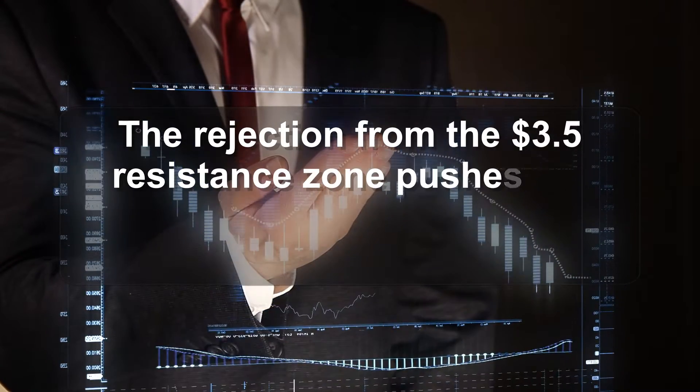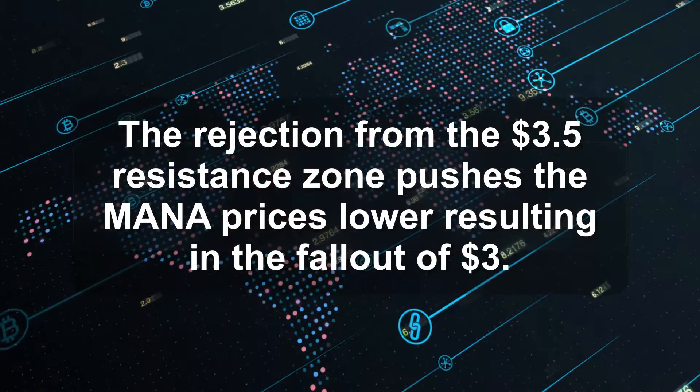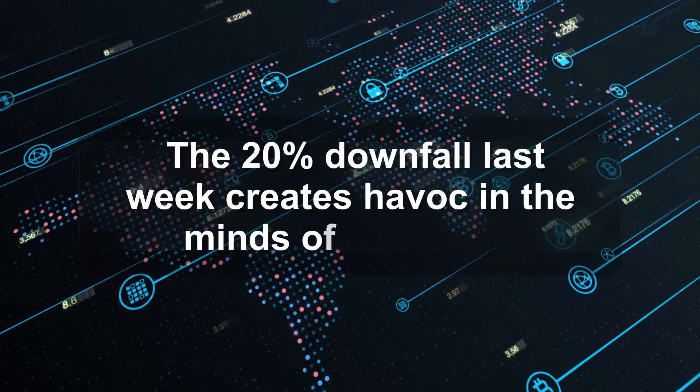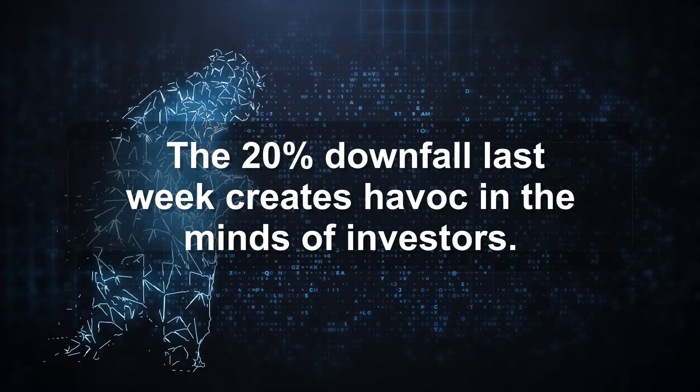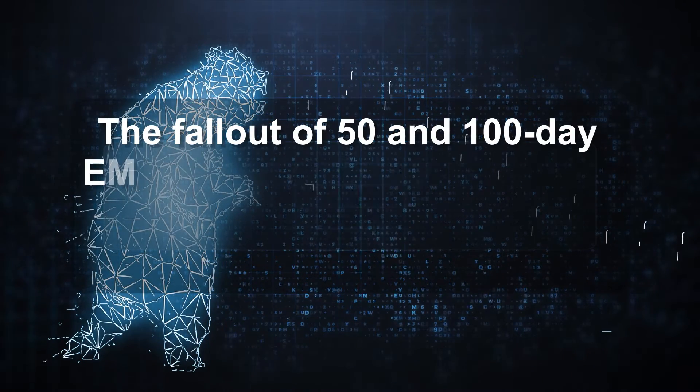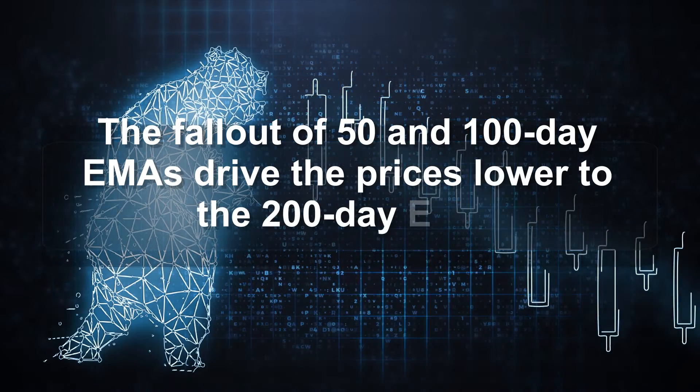The rejection from the $3.50 resistance zone pushes the Mono prices lower, resulting in the fallout of $3. Hence, the 20% downfall last week creates havoc in the minds of investors. The fallout of 50- and 100-day EMAs drive the prices lower to the 200-day EMA.